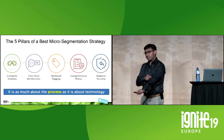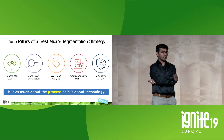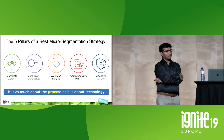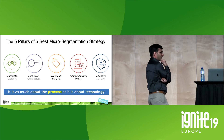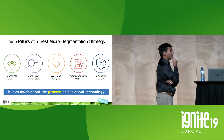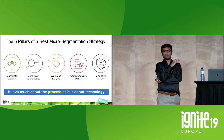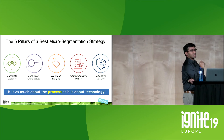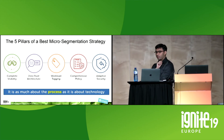Let's shift gears and talk about the five pillars of a best micro-segmentation strategy: complete visibility, zero-trust architecture, workload tagging, automated security actions with adaptive security, and comprehensive policy. When I walk you through each of these five steps, you'll realize it's not just about technology — it's as much about the process as it is about technology. The process you implement in your organization is equally important.